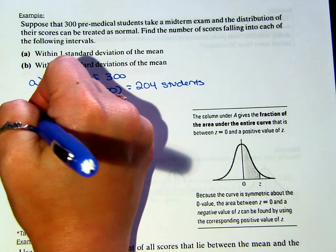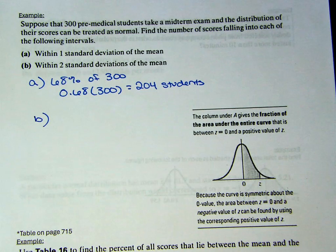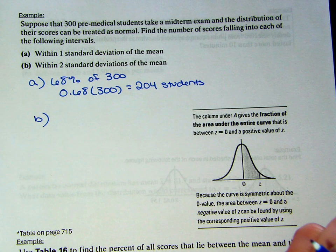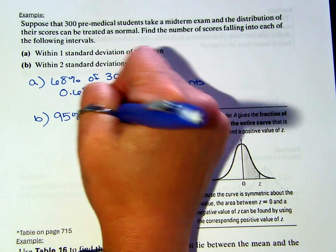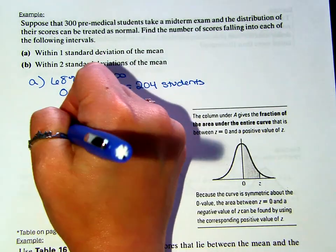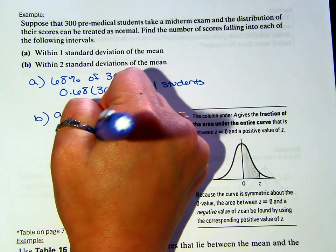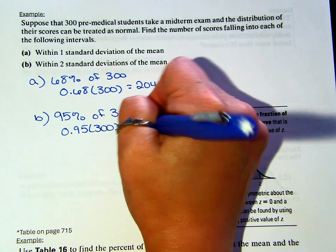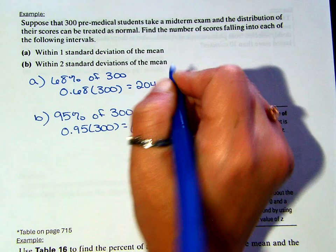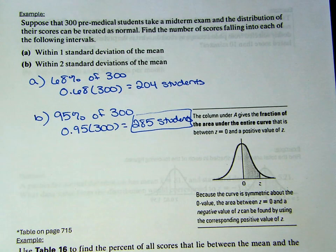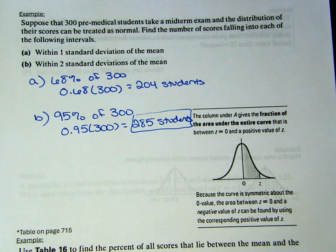Based on our empirical rule, 95% of students fall within two standard deviations. So we find 95% of 300 — that's 285 students. Some problems are just that easy. When we get to use the empirical rule, our lives are kept pretty simple and the algebra is minimal.